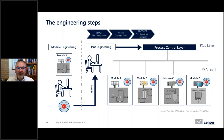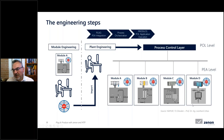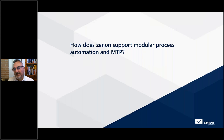Summarizing the engineering steps: module engineering involves an engineer providing automation for a specific module — PLC programming — and generating the MTP file. Separately, a plant engineer uses the MTP description and OPC UA communication to plug every module, orchestrate the modules, and produce the application. Modules A, B, and C can have different PLC types but share the common MTP description and OPC UA communication. This is exactly the engineering workflow.